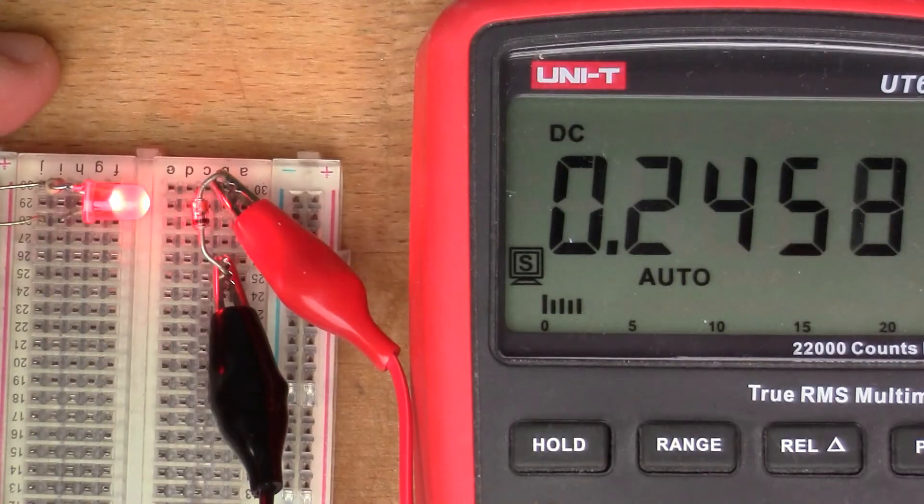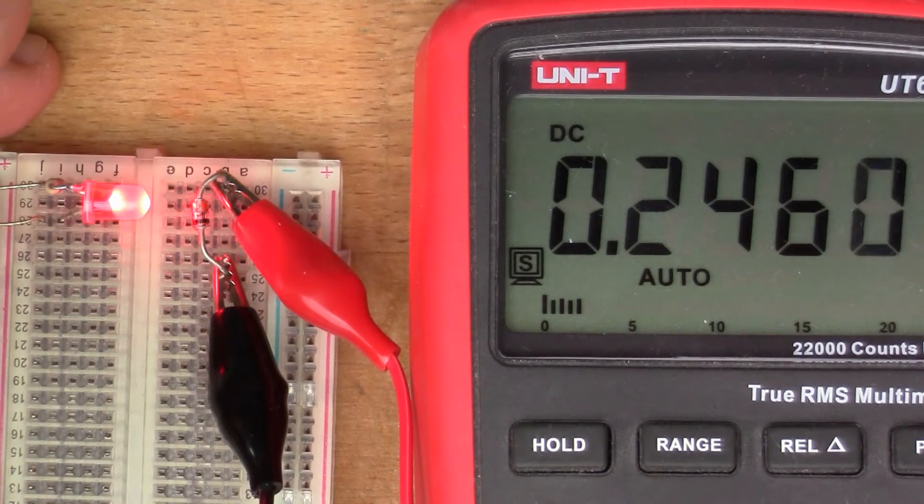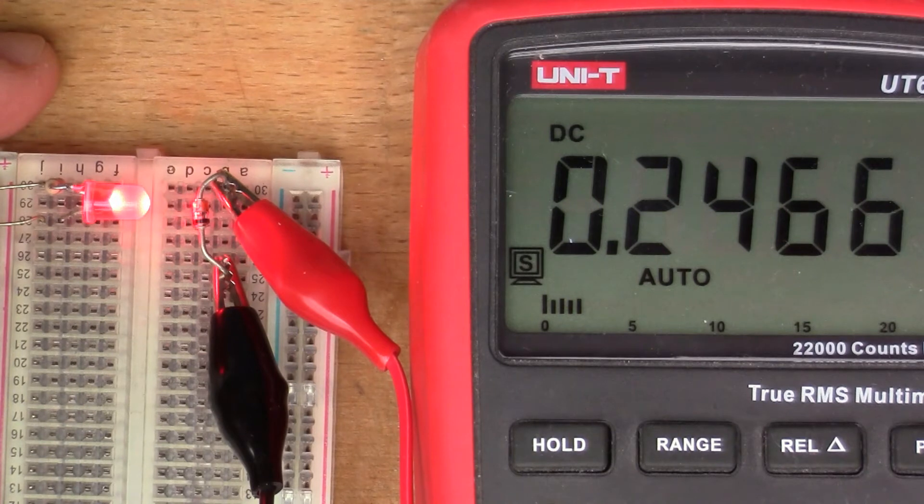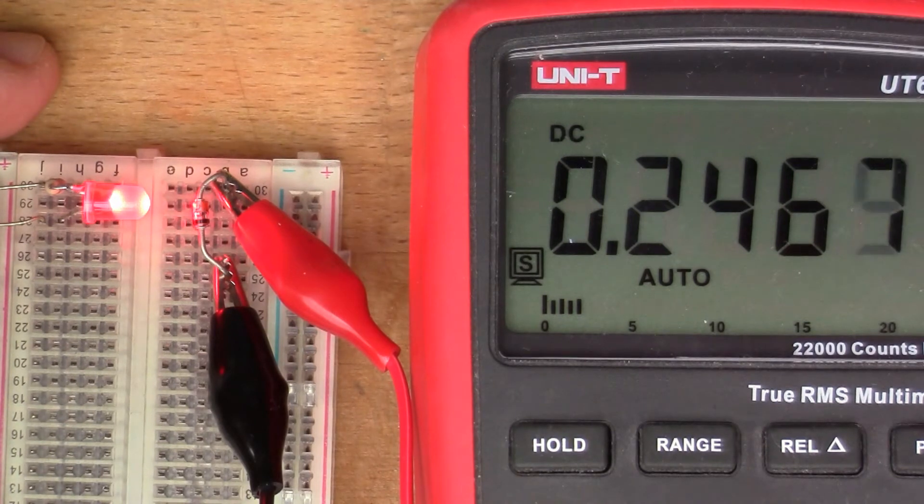Let's put that on voltage. So you can see here that with the LED switched on we've got about 0.25 volts being generated by that diode. Now the multimeter is in voltage mode measuring the voltage across the diode.